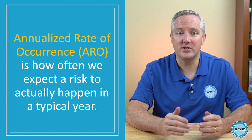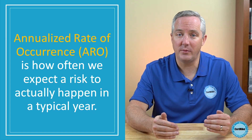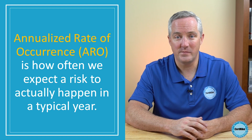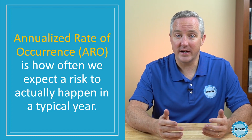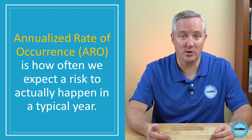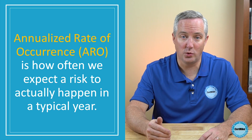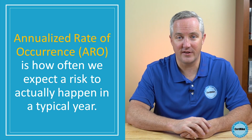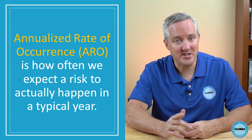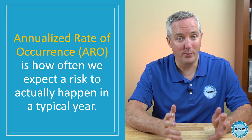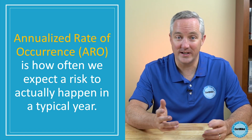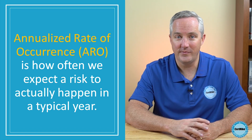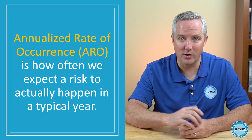Likelihood is where the annualized rate of occurrence, or ARO, comes into play. The ARO is the number of times each year that we expect a risk to occur. In the case of a flood, we might consult FEMA flood maps and determine that there is a 1% annual risk of flood in the vicinity of our data center. That's the same as saying that we expect 0.01 floods to occur each year, so our ARO is 0.01.